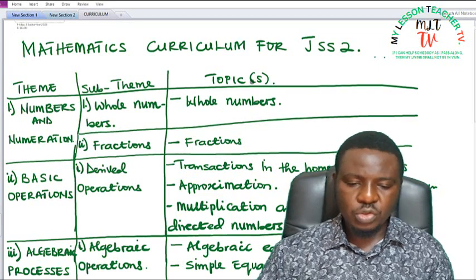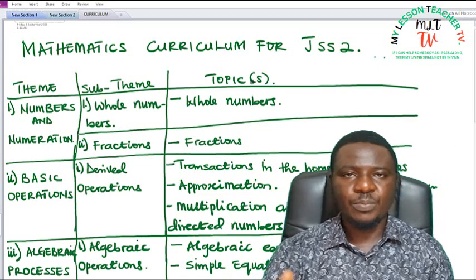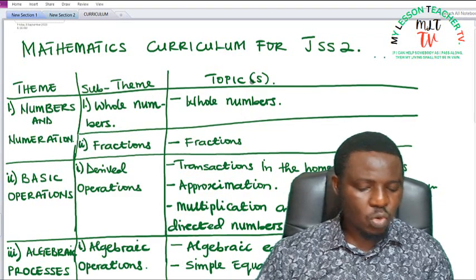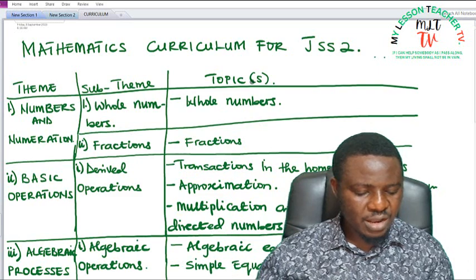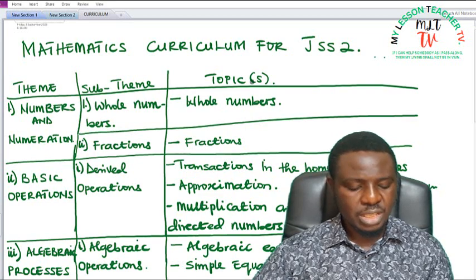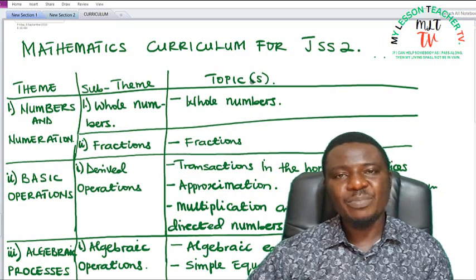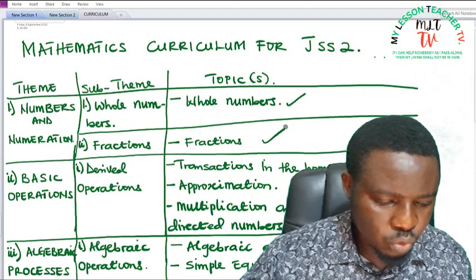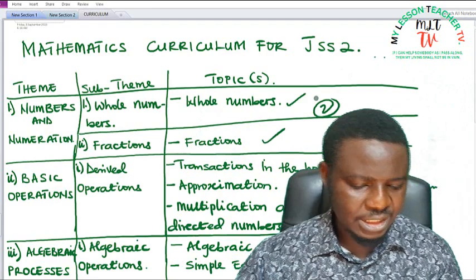Also, under Fractions — you were introduced to fractions in GSS1, where we taught types of fractions: proper fractions, improper fractions, and so on. In GSS2 under Fractions, you are going to be looking at how to express fractions as ratios, also as decimals and percentages. Then we shall take some quantitative reasoning on fractions, rationals, and percentages. So under Numbers and Numeration, we have two topics in GSS2.